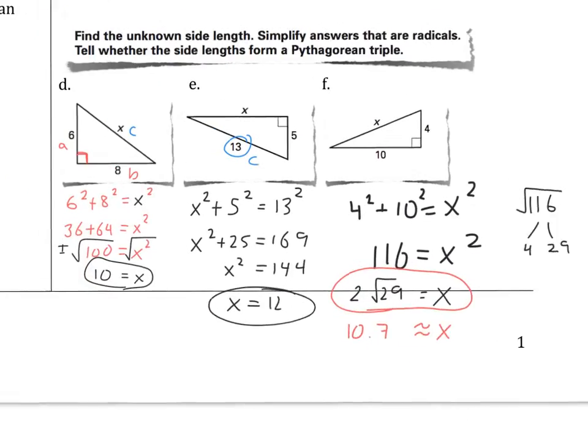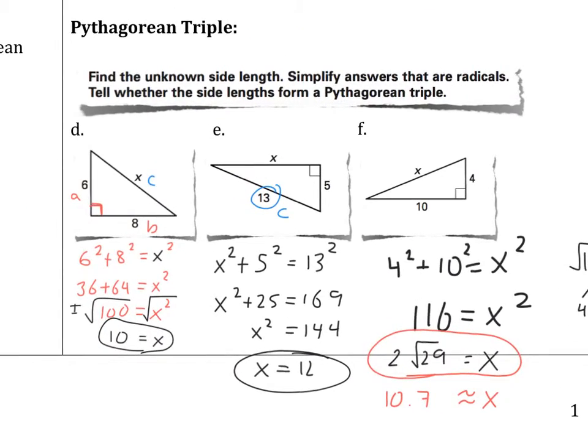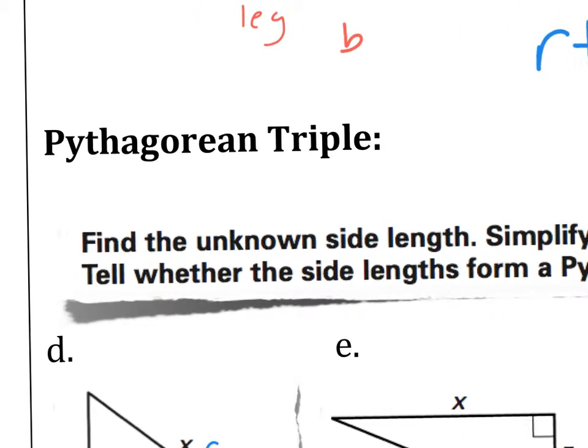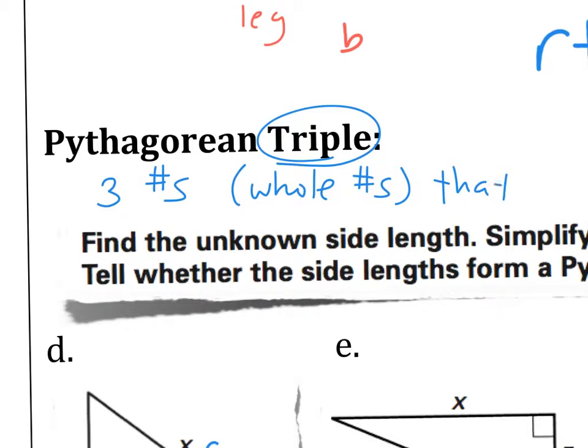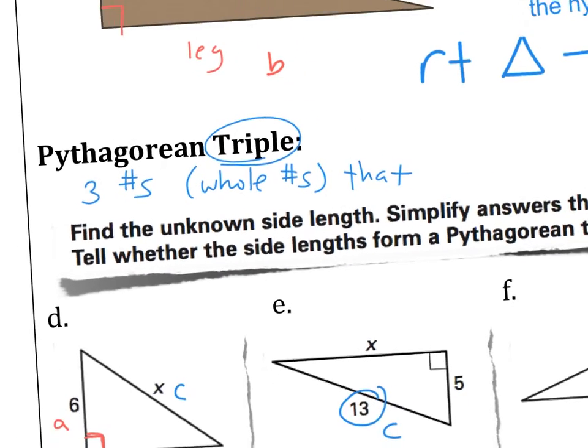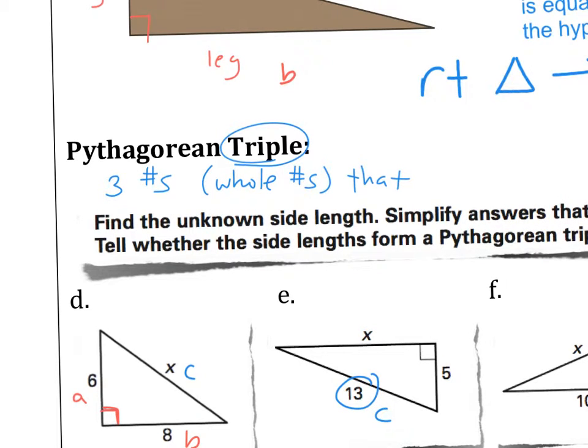Now one observation up here, one observation is there is something called a Pythagorean triple. Pythagorean triple are triple. That's three numbers. It's three numbers. What type of numbers? They have to be integers. More specifically, even whole numbers. Whole numbers that satisfy Pythagorean theorem.